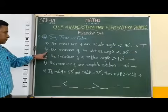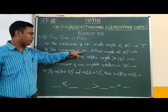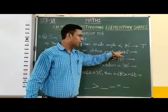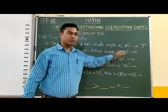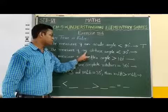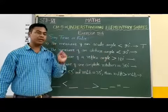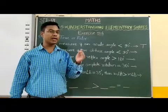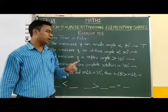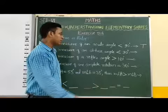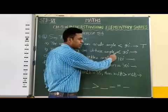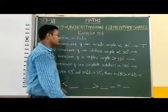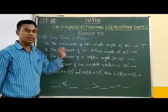Next, statement B: the measure of an obtuse angle is smaller than 90 degrees. We know that any obtuse angle is always greater than 90 degrees and smaller than 180 degrees. But here it is given that an obtuse angle is smaller than 90 degrees. Therefore, this statement is false.